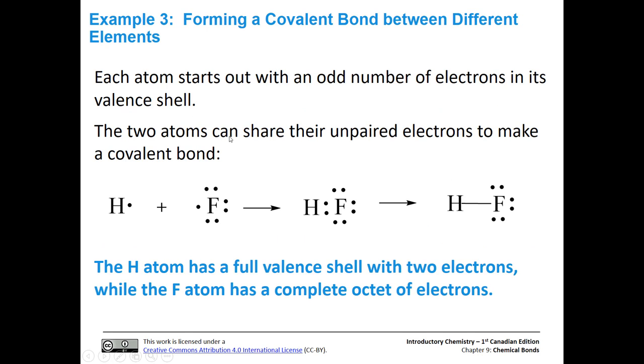What about a covalent bond between different elements? Let's look at HF, hydrogen fluoride. Each atom starts out with an odd number of electrons. Here's hydrogen with its one electron, and here's fluorine with its seven electrons. It would like eight, hydrogen would like two. If they get together and share these two electrons, now we have a bond here, a covalent bond with shared electrons, and these lone pairs fluorine still has. We can change those two dots into a dash showing there's two electrons.